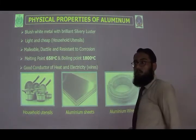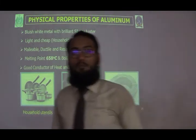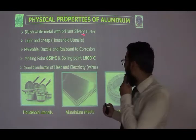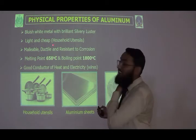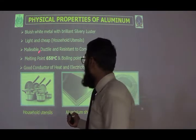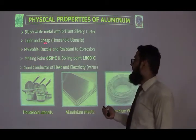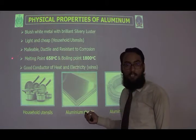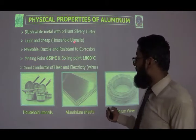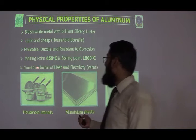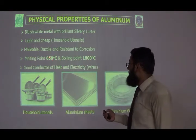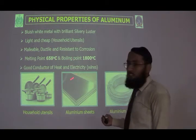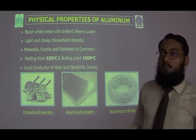Now we will discuss the properties of aluminium — physical properties and chemical properties. Aluminium is bluish-white in color. It is light and cheap. Its melting point is 658 degrees centigrade, and its boiling point is 1800 degrees centigrade. It is a good conductor of heat and electricity, so we use it to make wires.